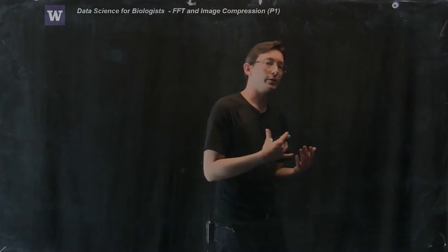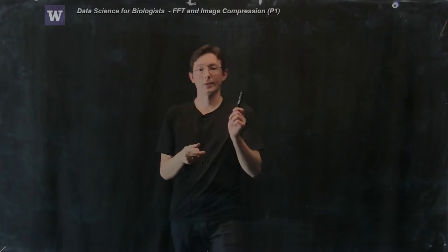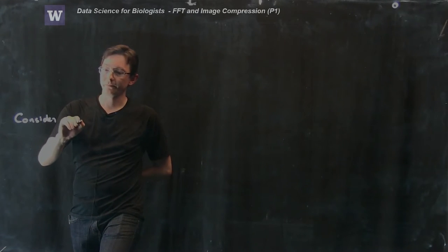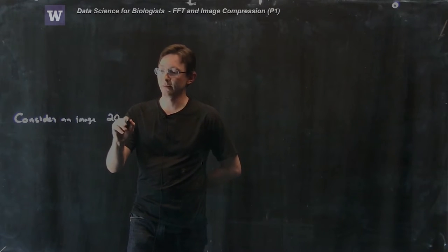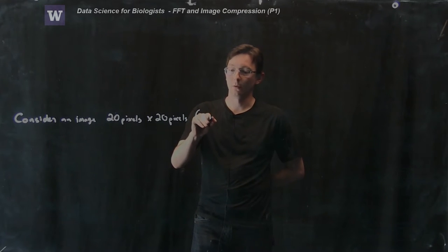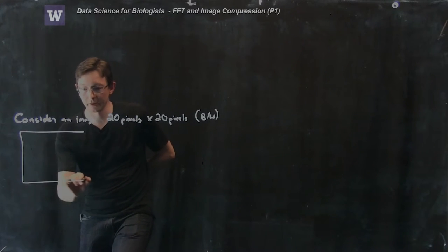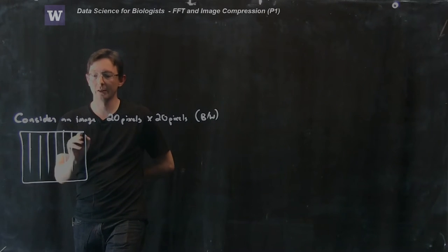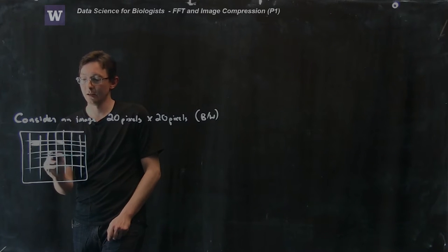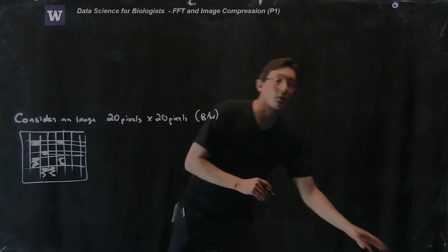So the first thing we're going to do is I'm going to convince you that image space, the space of all possible images, is a vast and enormous and interesting space. Let's think about this for a little bit. I want you to consider an image, a really dinky small image that's 20 pixels by 20 pixels. And let's say that these pixels can just be black or white.